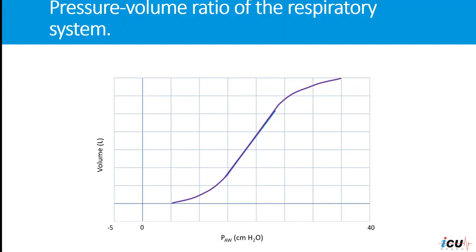Let's start with the relationship of volume to pressure of the respiratory system. This graph shows that the pressure volume ratio is not linear.